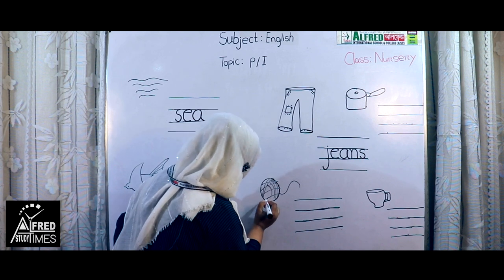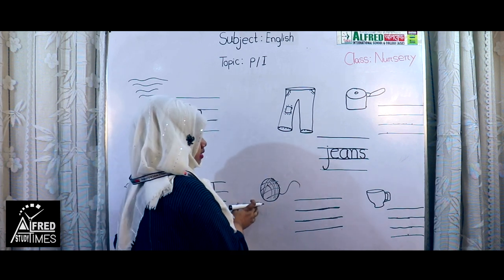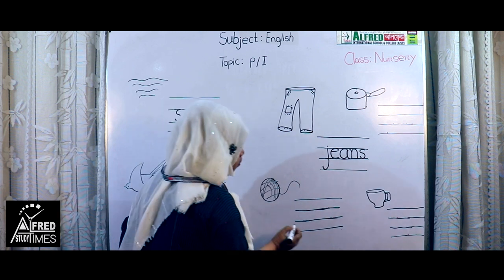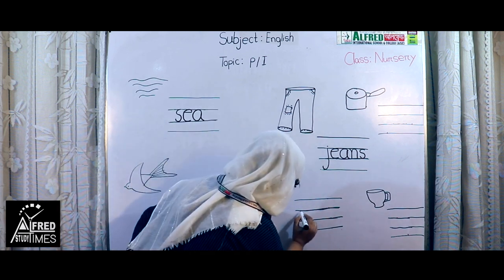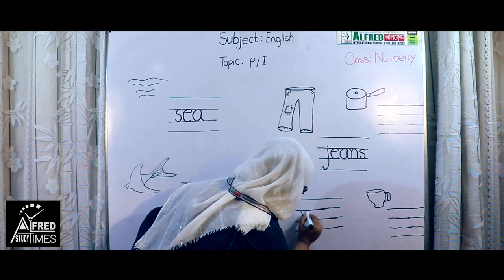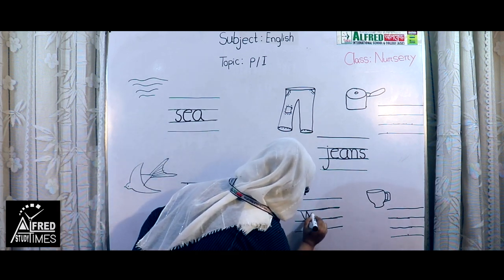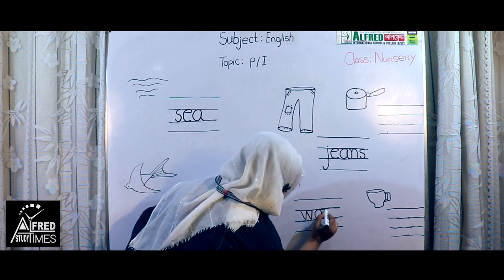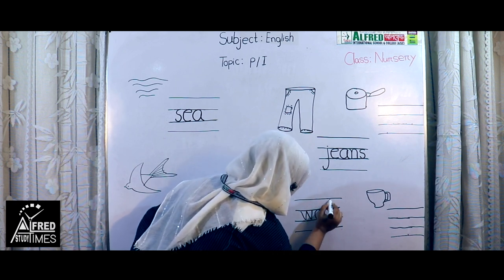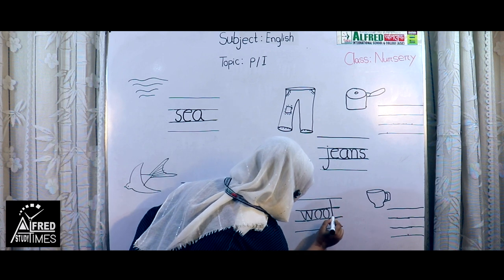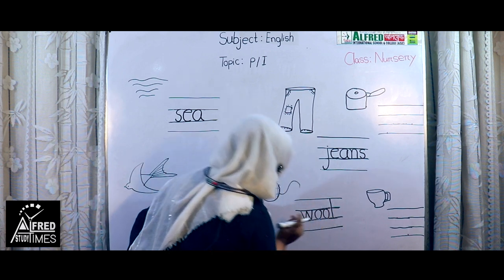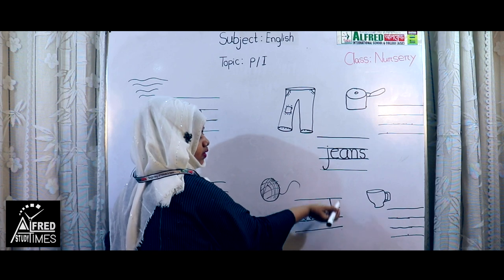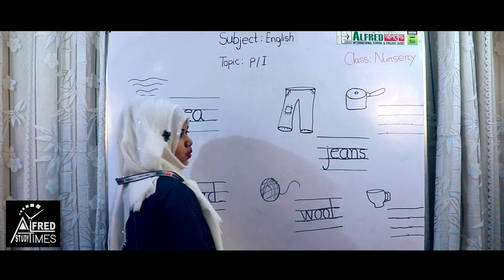What is this? This picture name is ul. Ul is spelling W-O-L. Ul. Ul is spelling W-O-L. Ul.